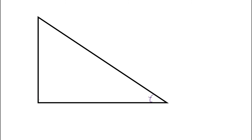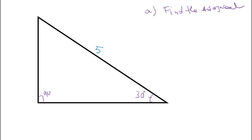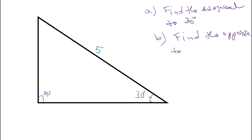Let's do an example. Let's say this angle is 30 degrees. We have a right angle triangle with 90 degrees here and this side is 5 — that is the hypotenuse. The question is: A) find the adjacent to 30 degrees, B) find the opposite to 30 degrees, and C) find the angle alpha.